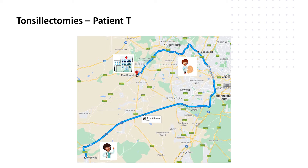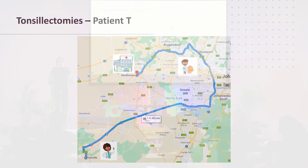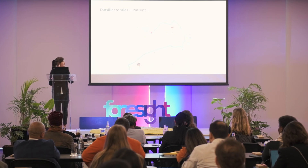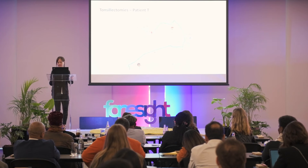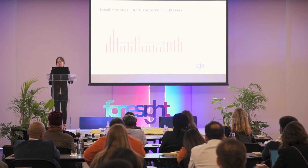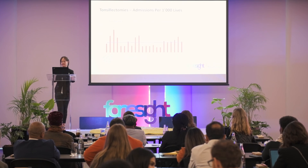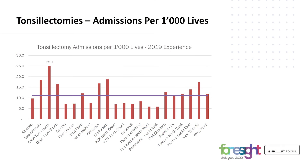This is what patient T's journey eventually looks like — GP consults in his hometown, referrals to specialists in Rustenburg, and a hospital admission which took place in Randfontein. We can perform these types of analyses at a much deeper and broader level than looking at one particular patient. Using the DRG and member allocations, we can investigate admissions per 1,000 lives — for example, looking at 2019 admissions per tertiary region.